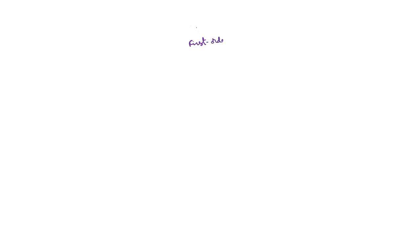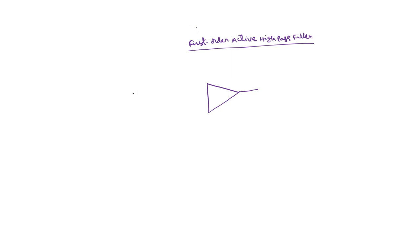First order active high pass filter. The circuit diagram of this high pass filter can be obtained by simply interchanging the capacitance and resistance of the low pass filter. This is the feedback circuit, same as the low pass filter. This is R1 and Rf, and here you have to exchange R and C.